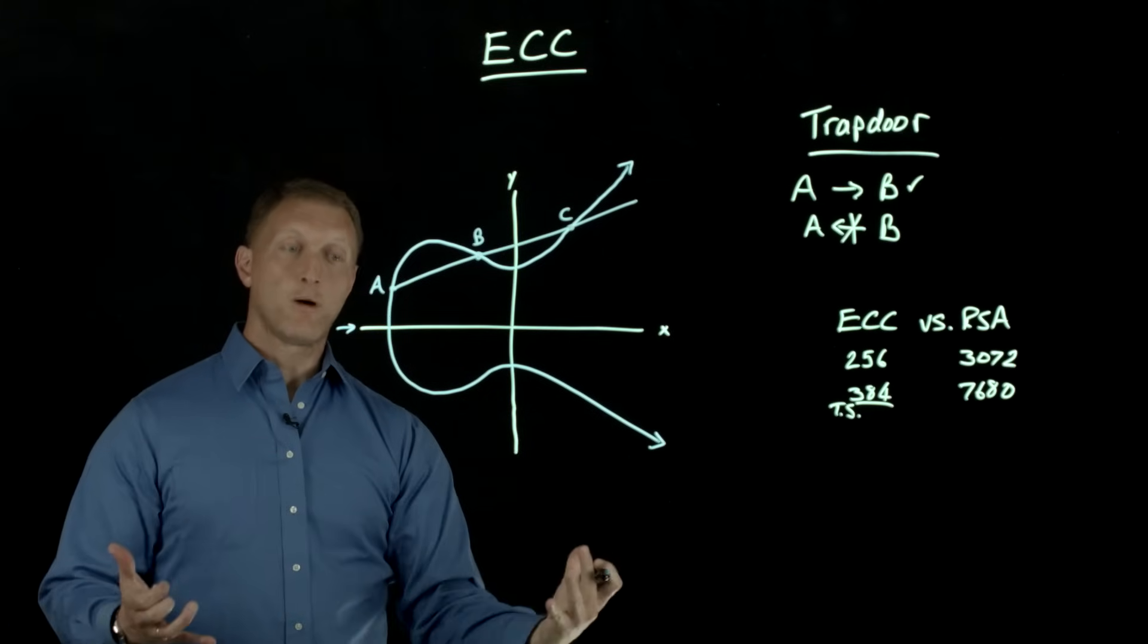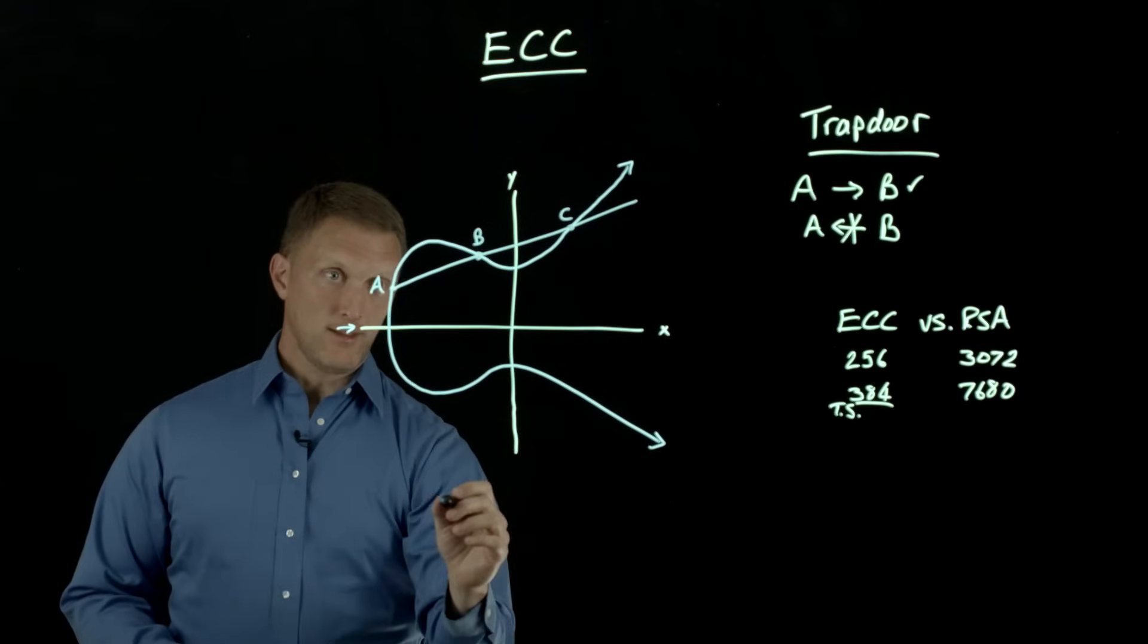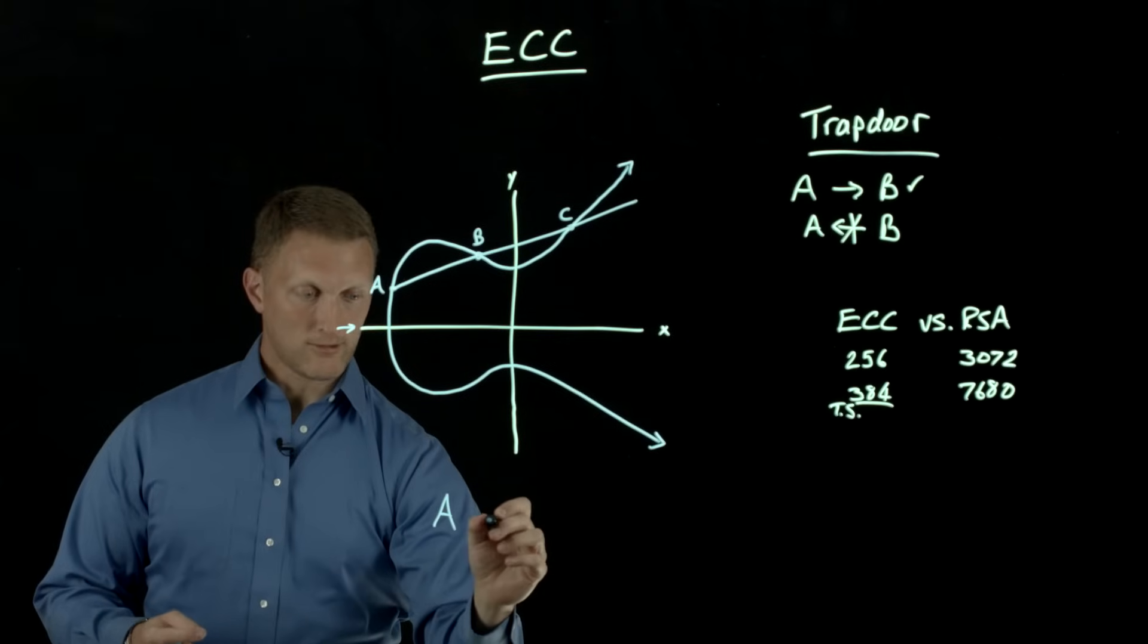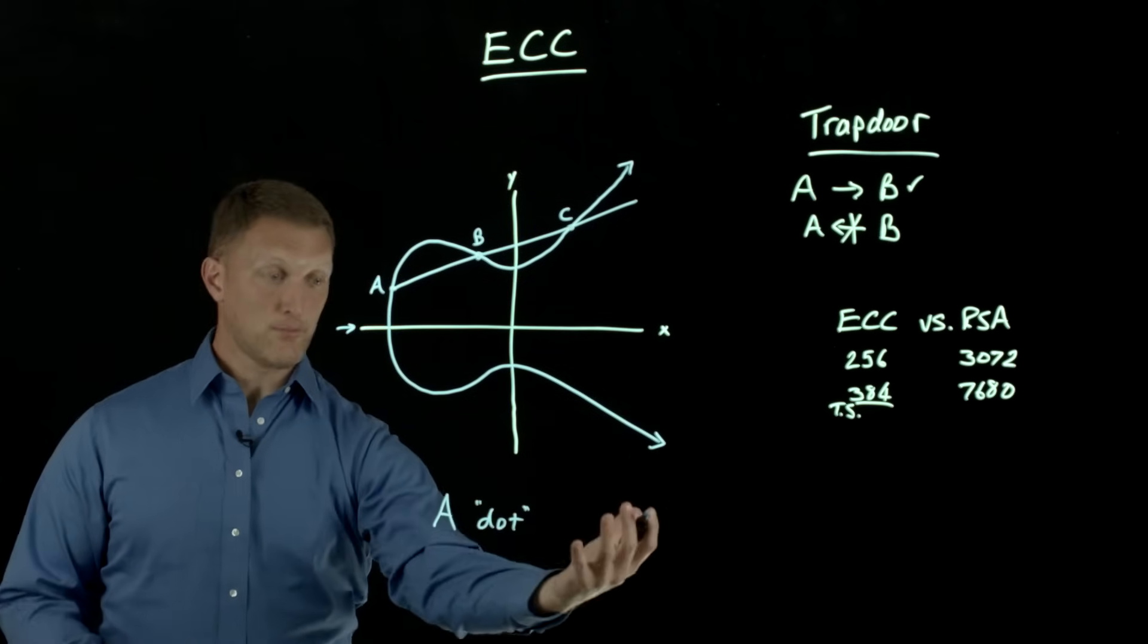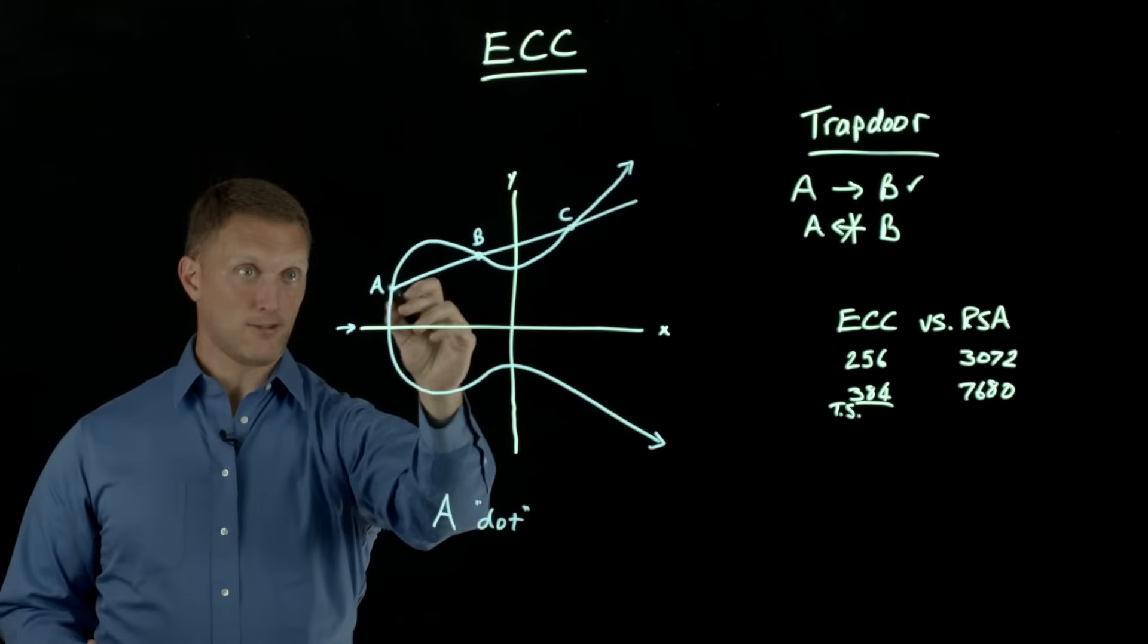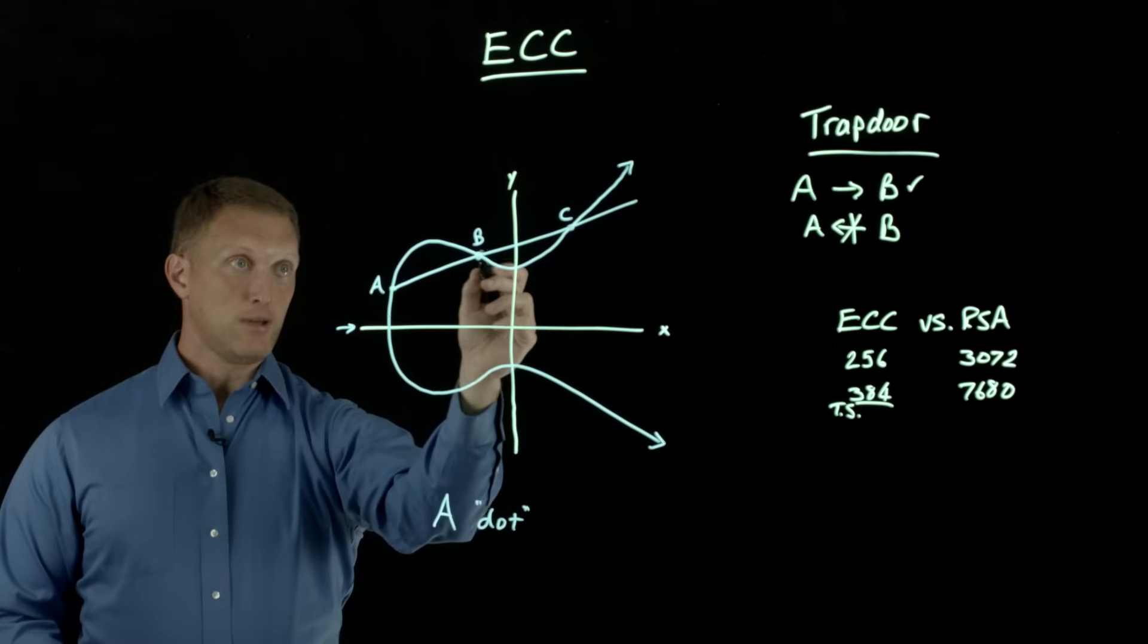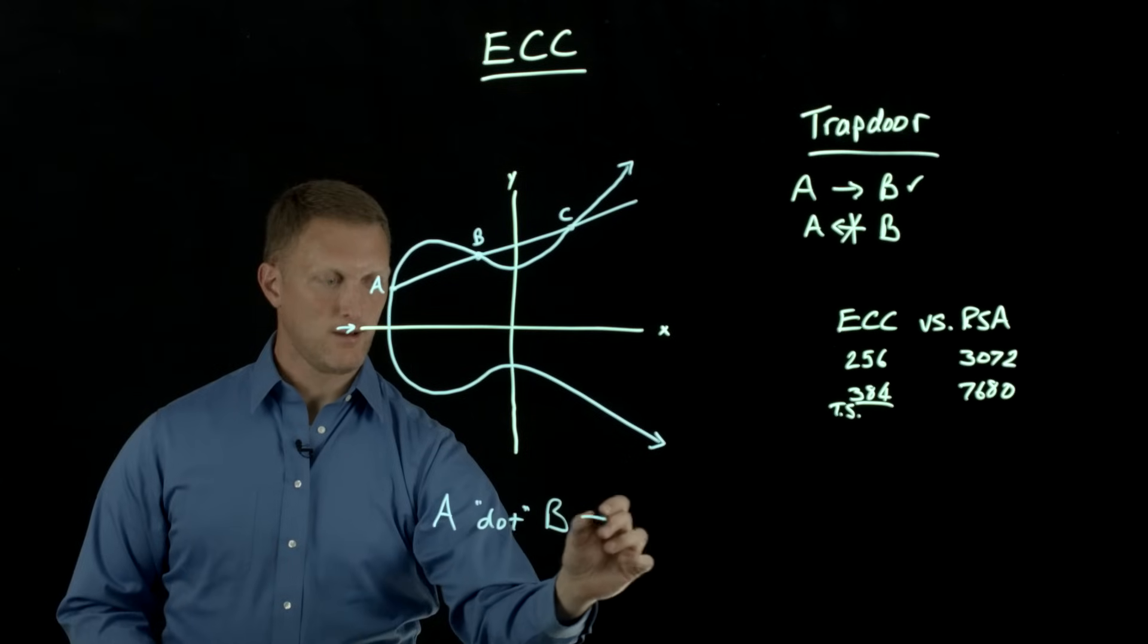If I were to take a point right here, A, and I were going to draw a line through it, it would hit it in another couple of points. So if I were to draw this line, let's say like that, then it's going to intersect it right here. Let's call that point B. And then you guessed it, that point is going to be C. In elliptic curve cryptography, what happens is you have a curve that's defined by a math function, and then you have a starting point A. And then you have this idea of what's called a dot function. So A dot something is going to yield a certain value.